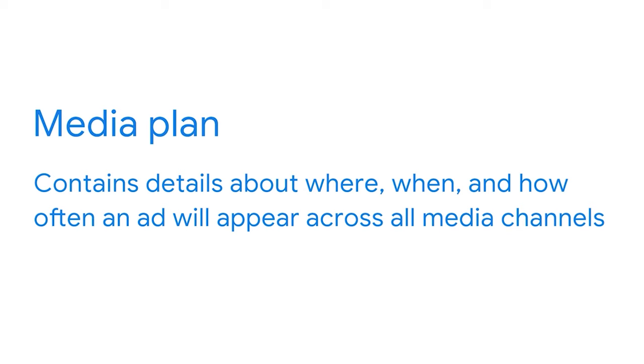Get ready to learn more about media planning, but first you need to know what a media plan contains. A media plan contains details about where, when, and how often an ad will appear across all media channels, including radio, TV, newspapers, magazines, paid search, and social media. Because this program is for digital marketing, your media planning will focus on digital media — you'll refer to your media plans as digital media plans.